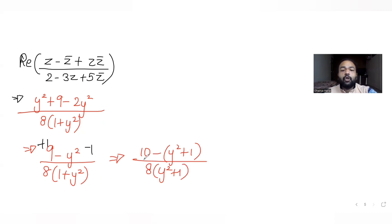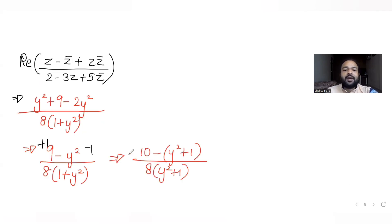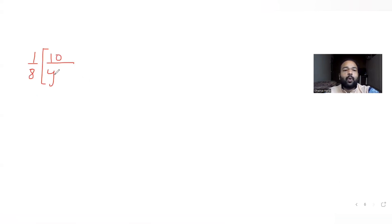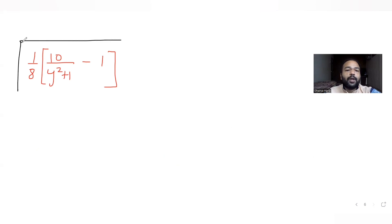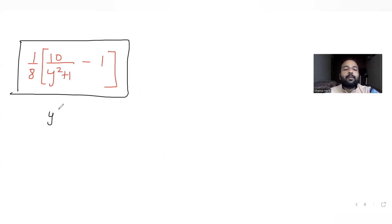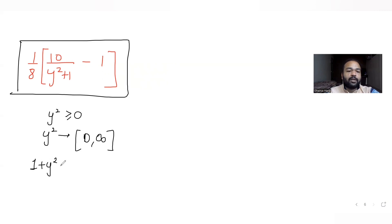So the real part of the entire expression equals (1/8) times [10/(1 plus y²) minus 1]. Now let's find the range of this expression. We know that y² is always greater than or equal to 0, so y² can range from 0 to infinity. Because of that, (1 plus y²) will have a range from 1 to infinity.